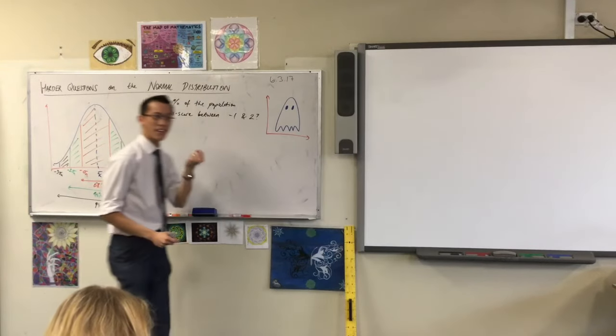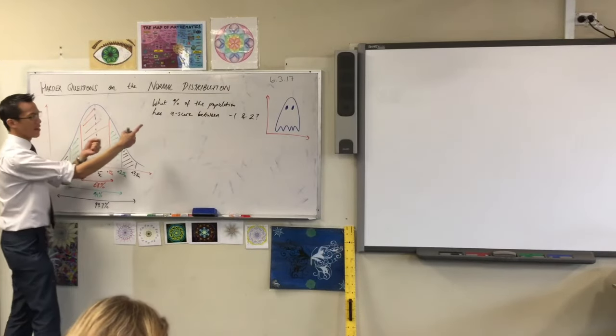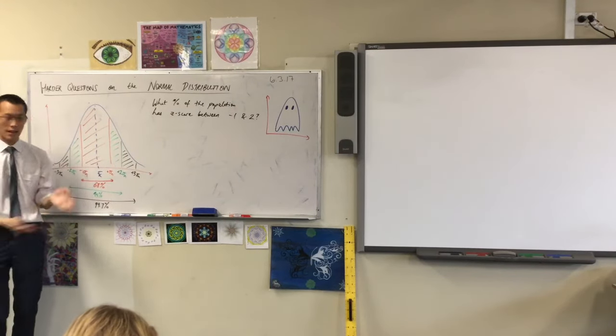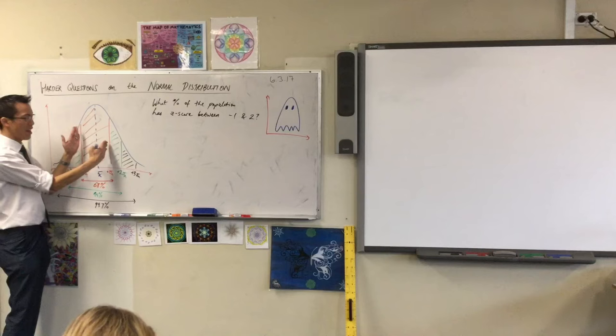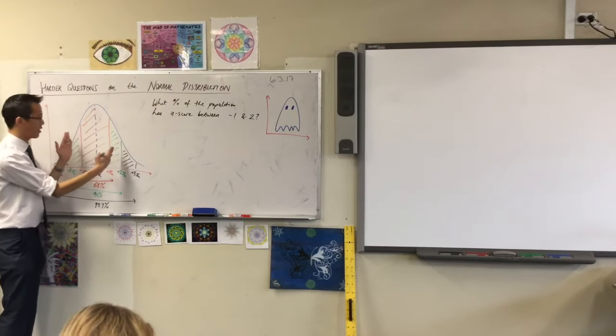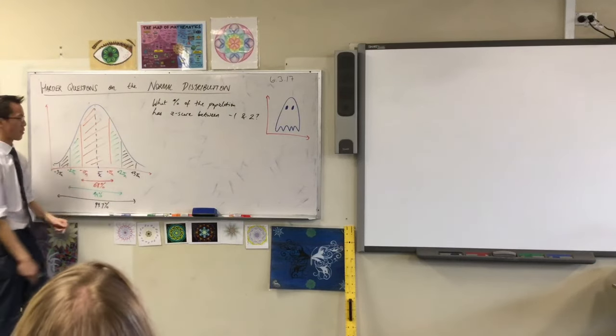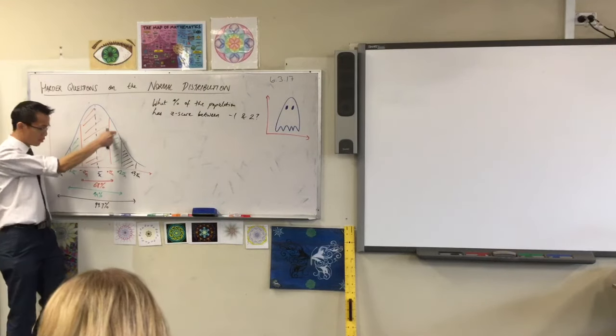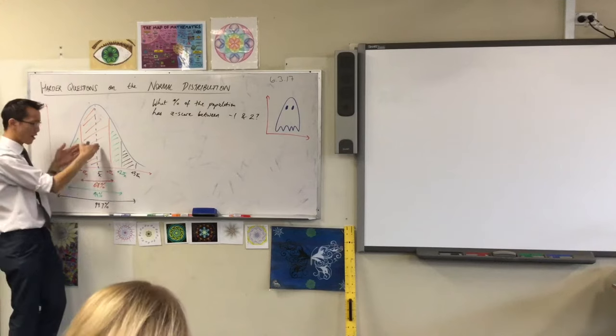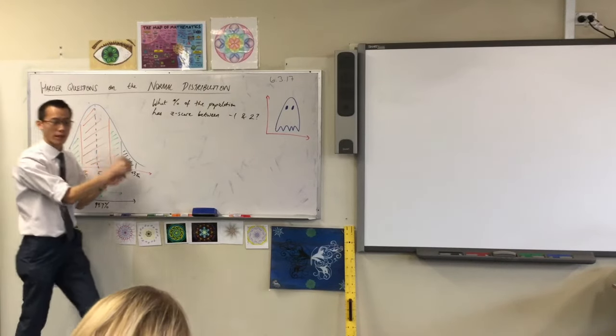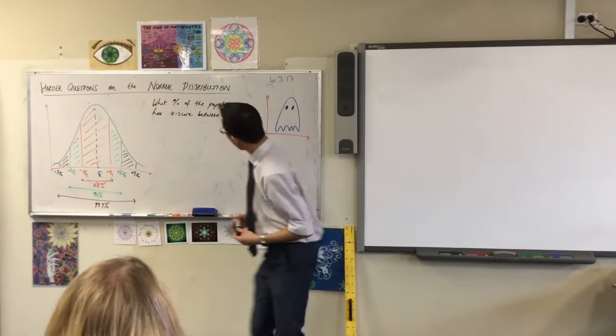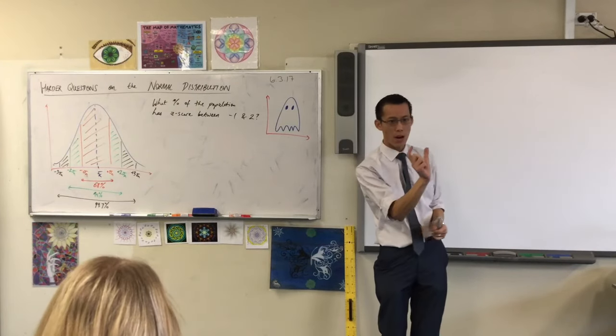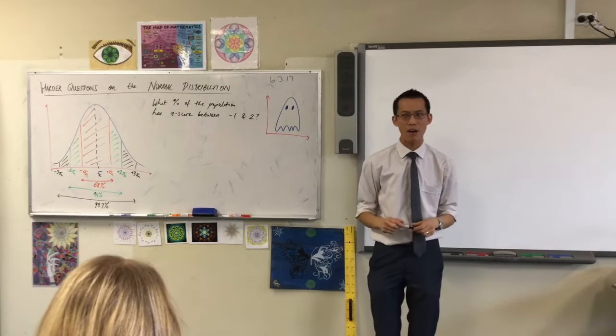Can you see that obviously between negative one and two includes this whole orange section? It's got at least 68% in it, and then it's got a bit more. So my answer to this is going to be 68% plus whatever this little slice here is. So I've got orange plus half of the green. So then the question becomes, how do I work out how much is in that one little green area? Does anyone want to suggest how I might go about doing that?